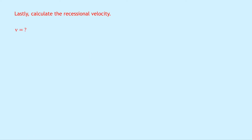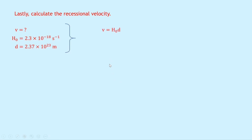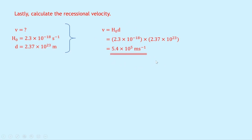So lastly, calculate the recessional velocity. Writing down what we know: we're trying to find v. Hubble's constant H₀ is 2.3 times 10 to the minus 18 per second — that's on the data sheet you'll get in the exam. The distance d is 2.37 times 10 to the 23 meters, which we've just worked out. Writing down Hubble's law, v equals H₀ times d, and substituting in the numbers: 2.3 times 10 to the minus 18 times 2.37 times 10 to the 23 gives 5.4 times 10 to the 5 meters per second. A good check is that this recessional velocity cannot be greater than 3 times 10 to the 8 meters per second, since nothing can travel faster than the speed of light.